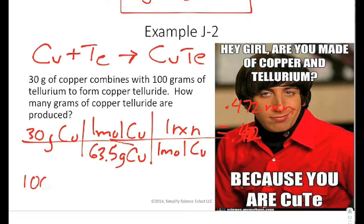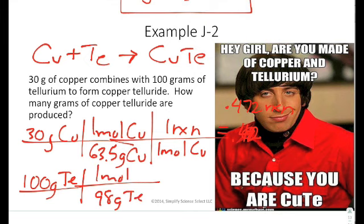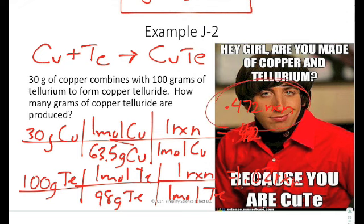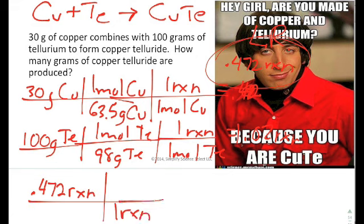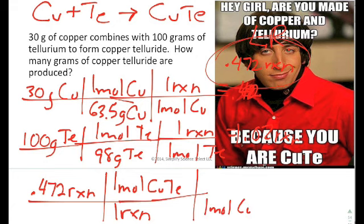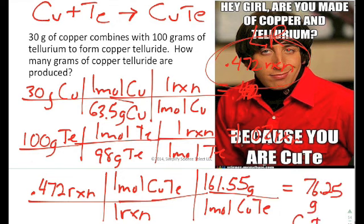I do the same thing with tellurium, 100 grams of tellurium, and I would say that there are 98 grams of tellurium in one mole of tellurium, and then I would say one mole is one reaction. If you look, there are 1.02 reactions, so 0.472 is my limiting reagent. So if I'm trying to predict how much is actually made at this point, I would use my limiting reactant. So I'd start off with the idea that I have 0.472 reactions, and in one reaction I produce one mole of CuTe, and then one mole of CuTe ends up having a mass of 161.55 grams. Multiply it out, and you end up getting 76.25 grams of copper telluride.